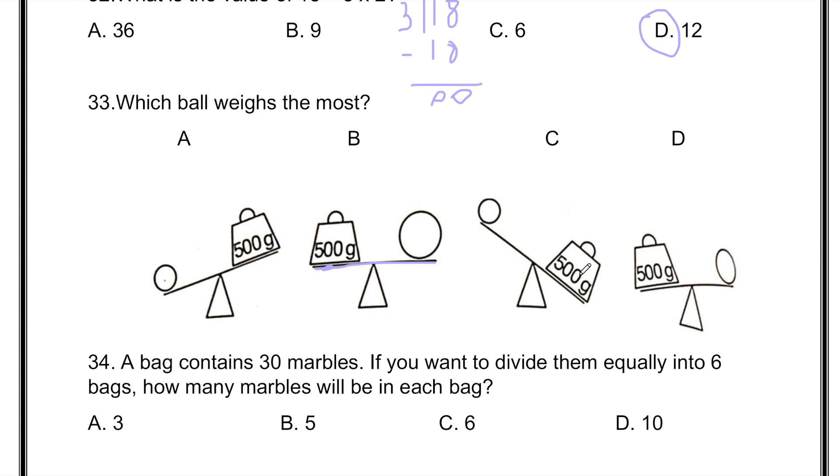Over here, 500 grams is definitely a lot more than this ball, that means this is definitely not the answer. Over here it is going like this, meaning it is equal, so that is also not the answer. We have to find the heaviest. The heaviest is this ball because it is lifting 500 grams. So the winner is A.